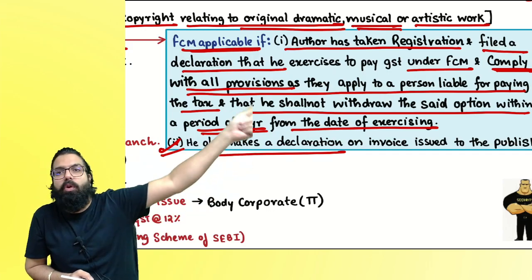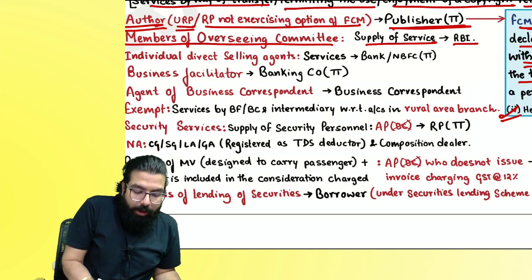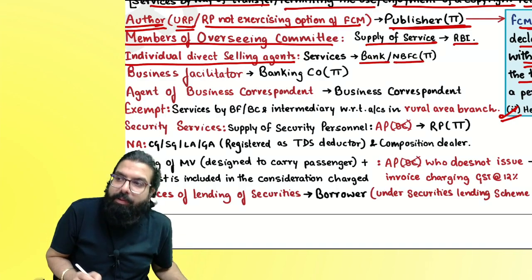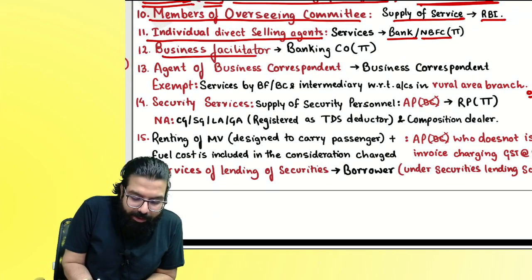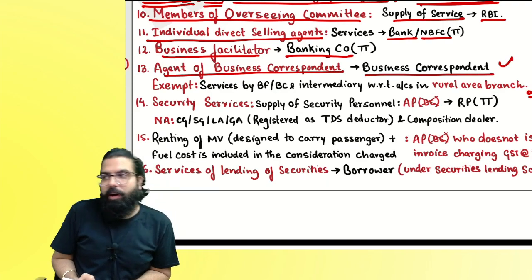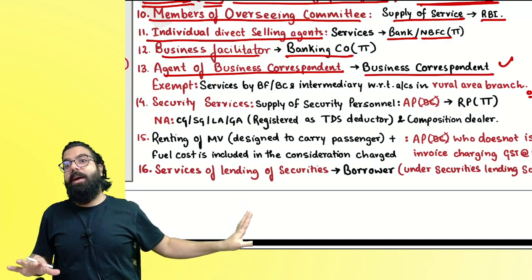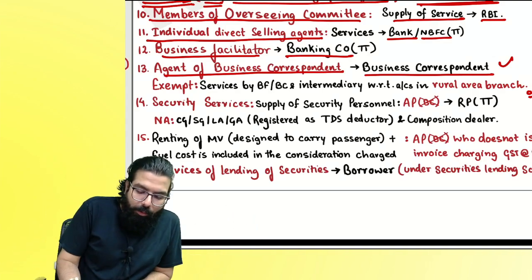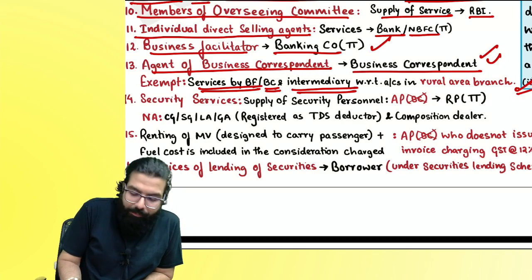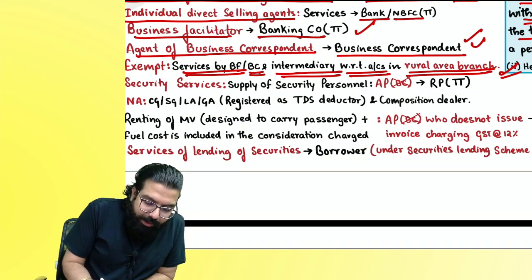Members of the overseeing committee giving services to RBI — RBI pays GST under RCM. Individual direct selling agents giving services to a banking company or NBFC — banking company or NBFC pays GST under RCM. Business facilitator giving to a bank — RCM applies. Agent of a business correspondent giving to the business correspondent — RCM applies. These services are exempt if given with respect to accounts in a rural area branch.